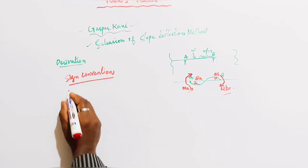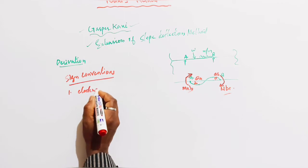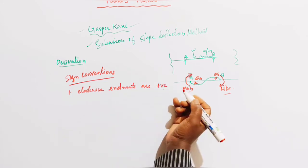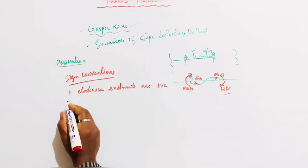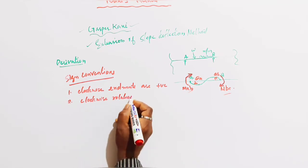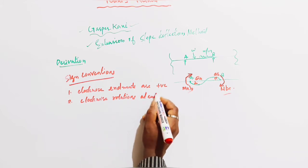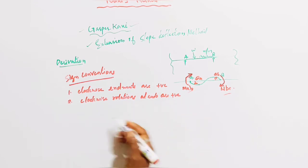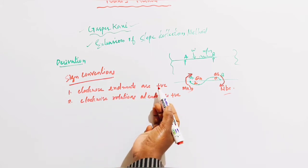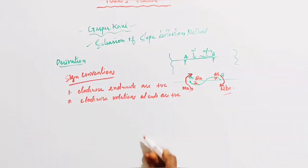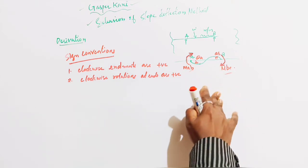Sign convention: First, clockwise end moments are positive, meaning anti-clockwise end moments are negative. Second, clockwise rotations at the ends are positive, meaning anti-clockwise rotations are taken as negative.